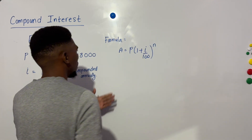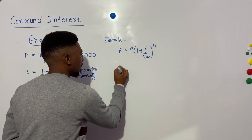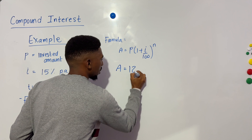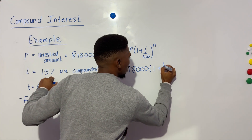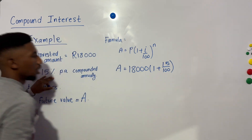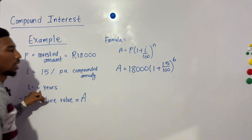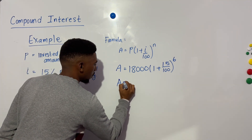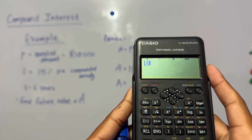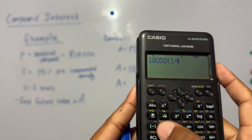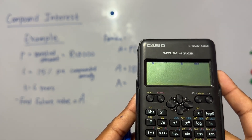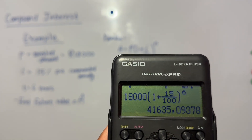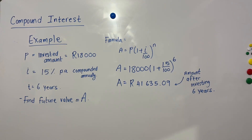To find the future value we use the compound interest formula: A equals P times bracket one plus i over 100 close bracket to the power of n. We plug in P as 18,000, the interest as 15 over 100, and the exponent as 6. Putting that into a calculator: 18,000 multiplied by bracket one plus 15 over 100 close bracket to the power of 6.